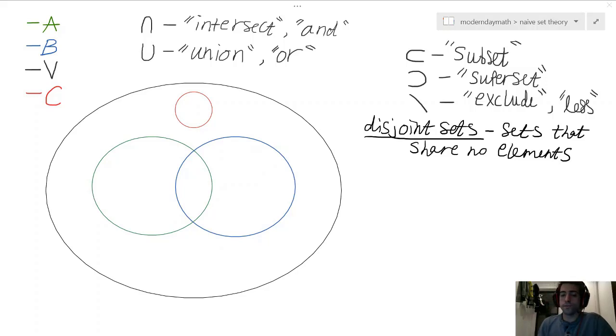Alright, so I have gone ahead and I've erased the definition that I wrote for complement and replaced it with the definition of disjoint sets, which are sets that share no elements with each other. And you'll see that I've now added a set C inside of V that shares no elements with A or B. So, I won't be able to really show just how powerful this can be in this video, but this notion really comes in handy.